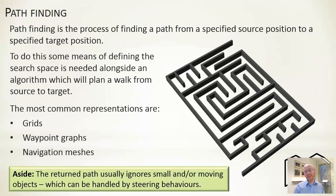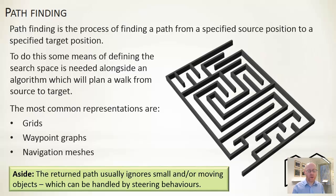Important in terms of doing this is the underlying representation of the world — how we are actually defining our world — and this will determine the type of path we output. We're going to look at three fairly common representations: grids, waypoint graphs, and navigation meshes.